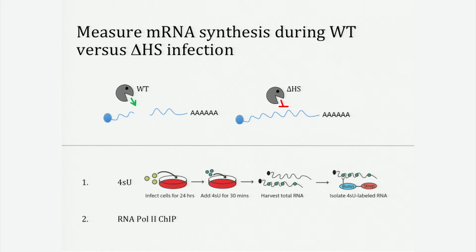First, we look at 4SU, which measures nascent mRNA levels through incorporation of the uridine analog 4-thiouridine into nascently transcribed mRNAs, and then you can separate this from the pool of total mRNA. The second method is looking at the occupancy of RNA Pol II at genes using chromatin immunoprecipitation.